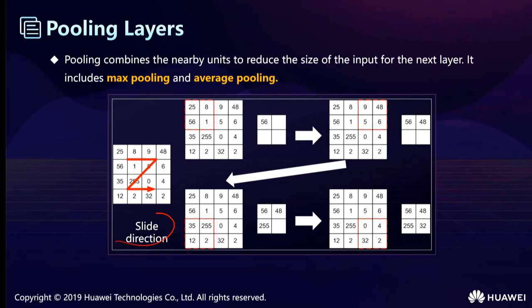We scan from left to right across each area, compare all values, and select the maximum value. For example, the maximum in an area is 48. This process yields a smaller-sized matrix, which helps us to calculate more efficiently.